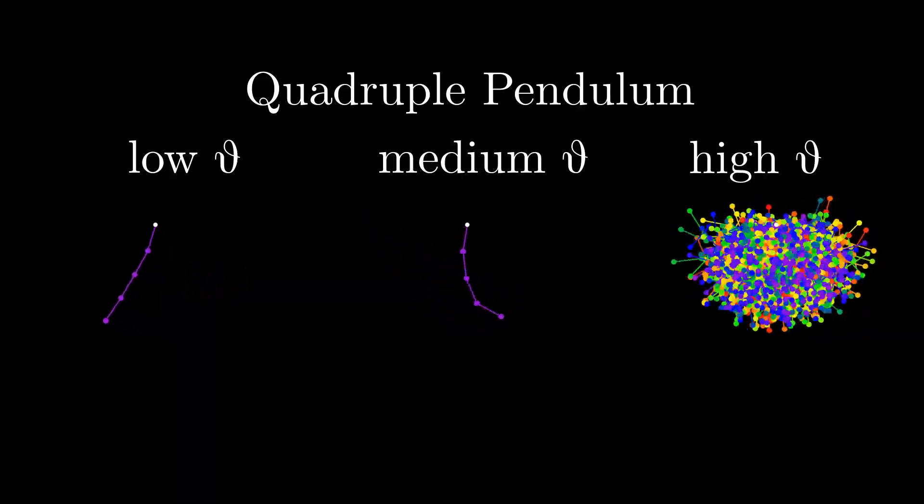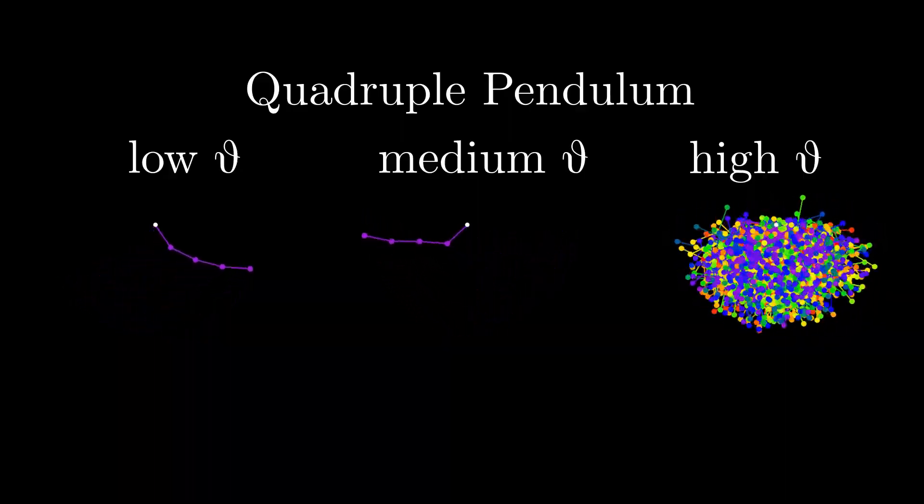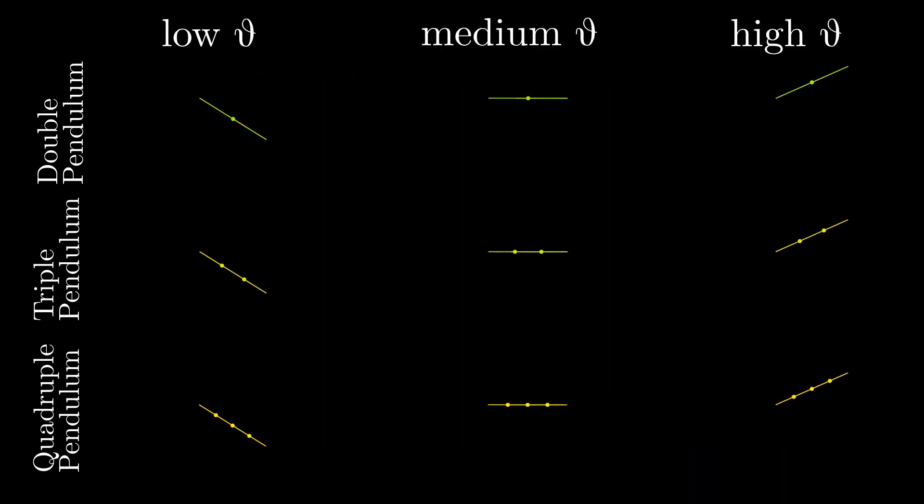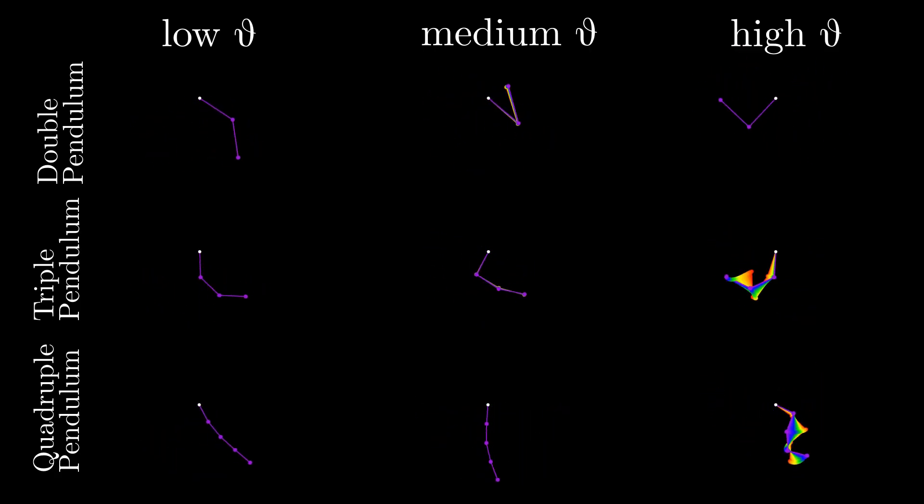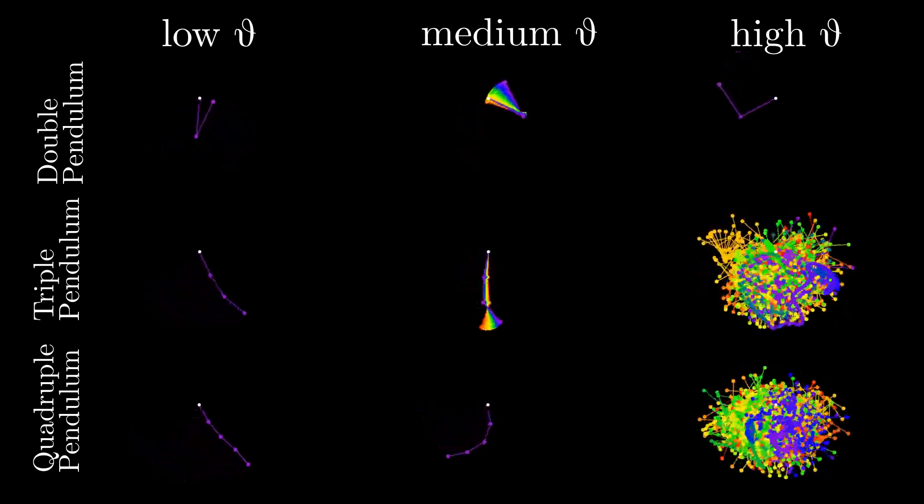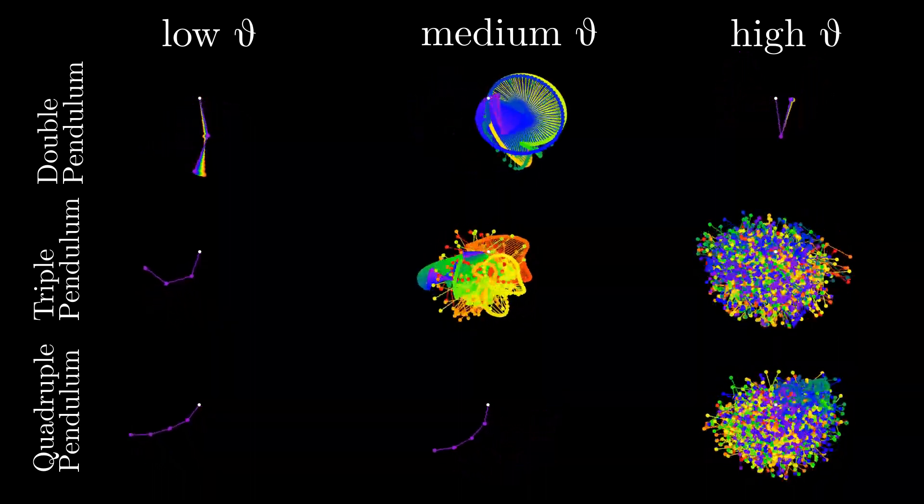To compare what's happening overall, I will now visualize all the nine pendulums we've just seen next to each other on the same screen. As we can see now much more clearly, the way the pendulums behave depends on both the number of limbs and on their starting position.